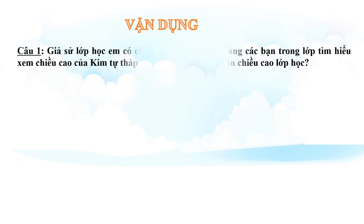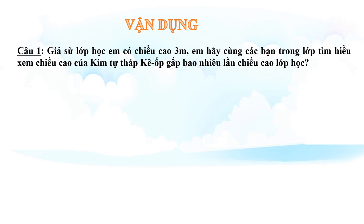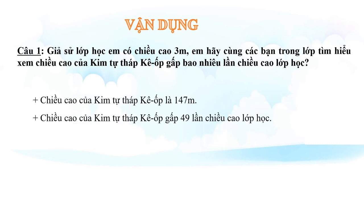Phần vận dụng: Câu 1 - Giả sử lớp học của em có chiều cao 3 mét, em hãy cùng các bạn tìm hiểu xem chiều cao của Kim Tự Tháp Kheops gấp bao nhiêu lần chiều cao lớp học. Kim Tự Tháp Kheops cao 147 mét. Chúng ta sẽ lấy 147 chia cho 3, cho ra đáp số là 49 lần chiều cao lớp học. Tính ra kim tự tháp Kheops rất là cao!